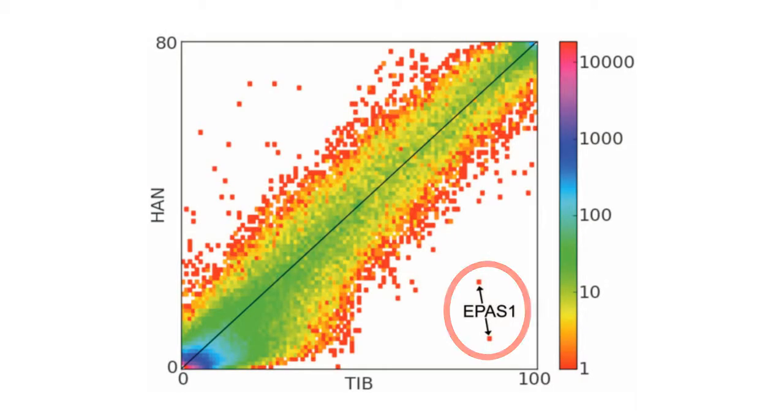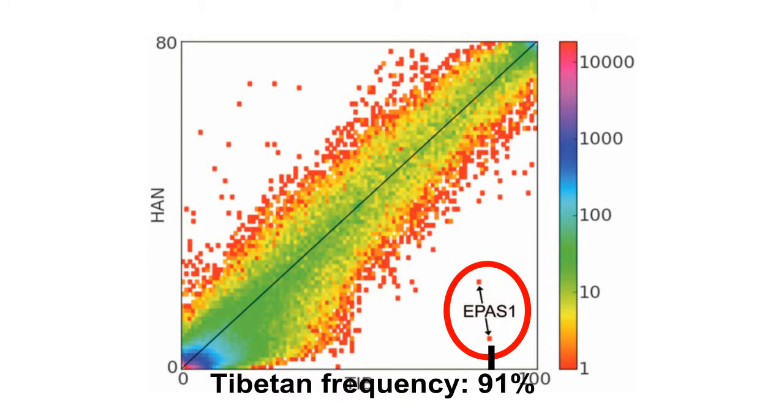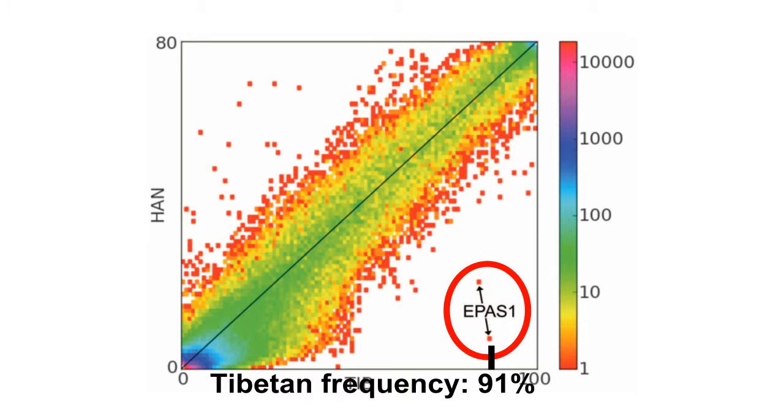These two mutations here are in the EPAS1. The Tibetans have a frequency of about 91%, while the Han is at 13%. It's very difficult to explain that just by chance.